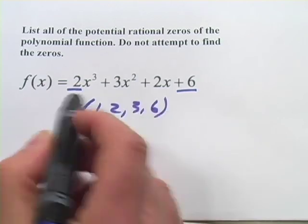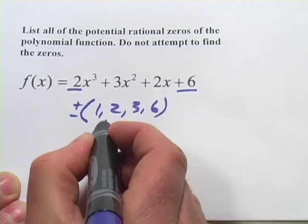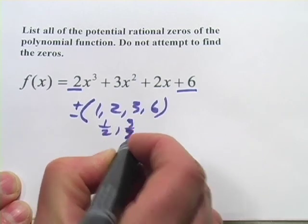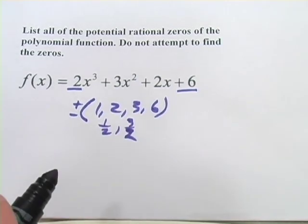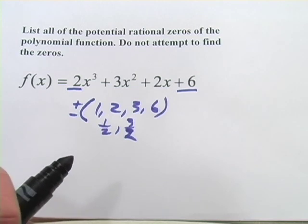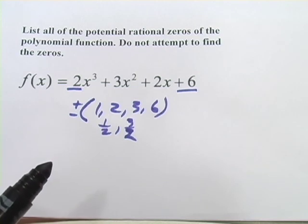And then, whoops, we got to add that over 2. The ones you get over 2 that are different are 1 half and 3 halves. So that would be our answer to that one. So that's a little bit about the rational zero theorem.